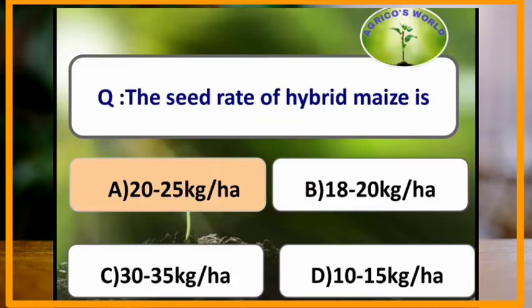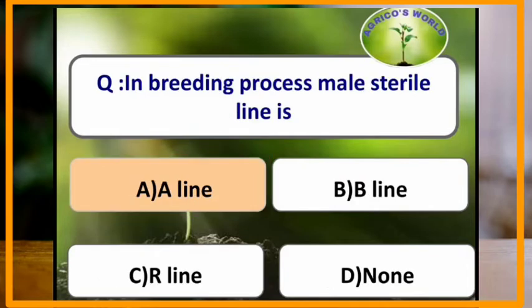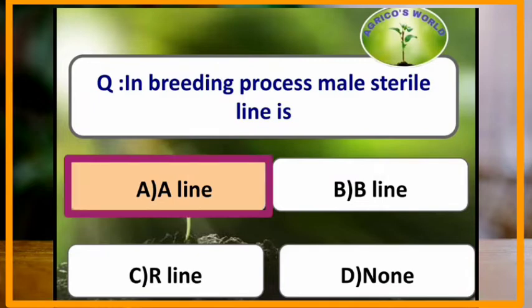The seed rate of hybrid maize is 20–25 kg per hectare. In the breeding process, the male sterile line is the A line, the B line is the maintainer line, and the R line is the male fertile line.